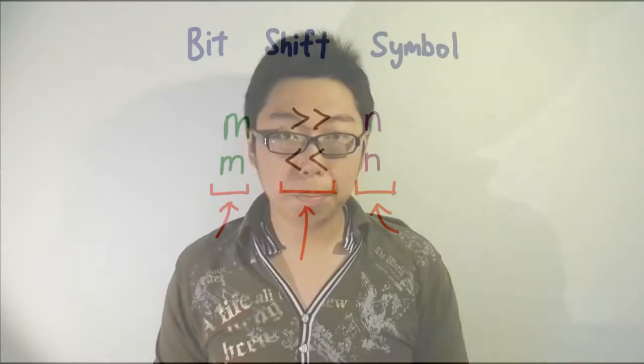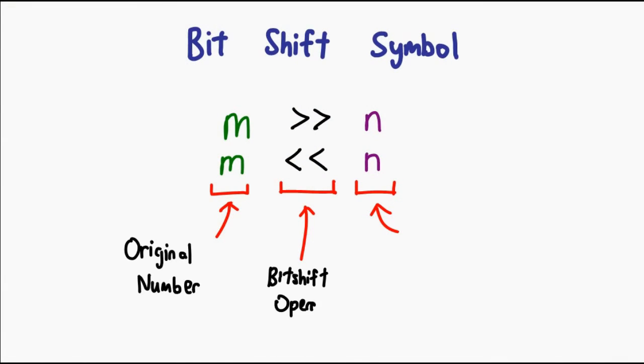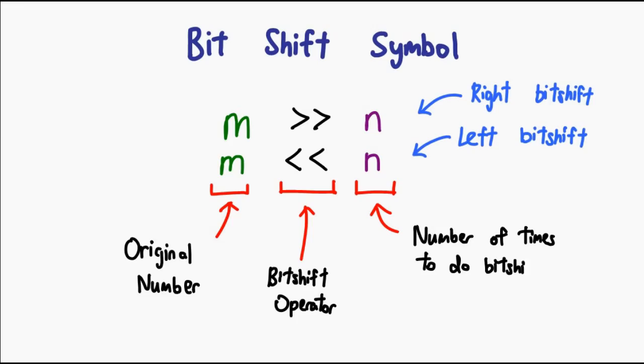You write a bit shift operation like this: your original number is here, then you choose your bit shift operator, and then say how many times you want the shift to happen. That's all there is for today's episode. We've taken a look at all bitwise operations on bit strings of essentially any length, and we've also covered bit shifting operators.